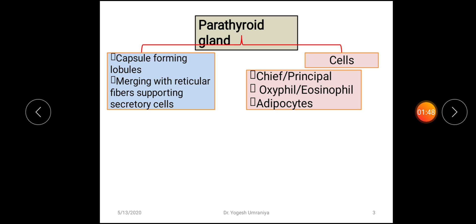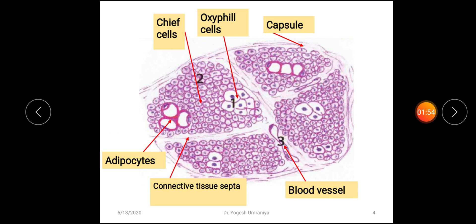Now we will understand the structure of the parathyroid gland with the help of a schematic diagram. On the peripheral aspect you can see the capsule of the parathyroid gland, and from this capsule there is extension of connective tissue septa towards the glandular substance, dividing the gland into various lobules — you can see four lobules here within the figure. Within the connective tissue septa there is placement of blood vessels, as you can see here.